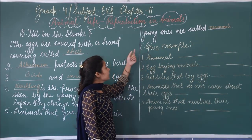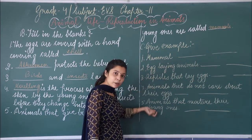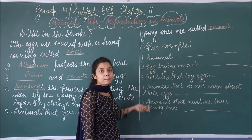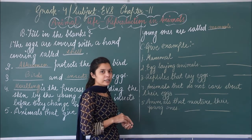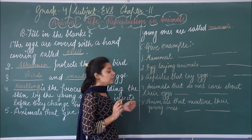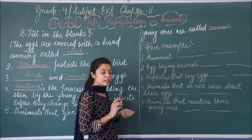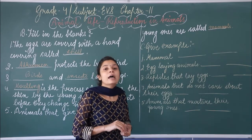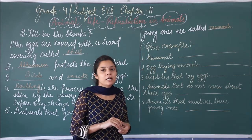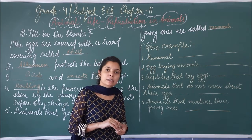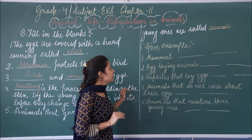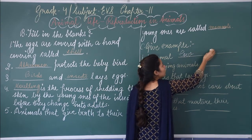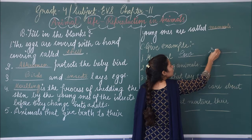Part C is give examples. Aapko do-do examples likhne hain for each. First, mammals — mammals ke do examples: wo animals jo directly apne young ones ko birth deti hai. We can write cow and dog.